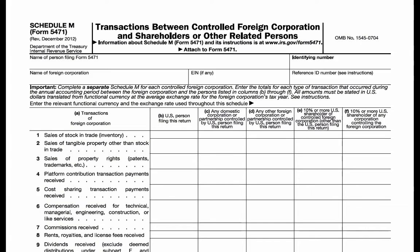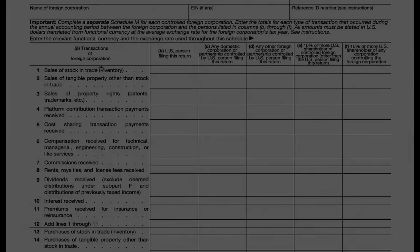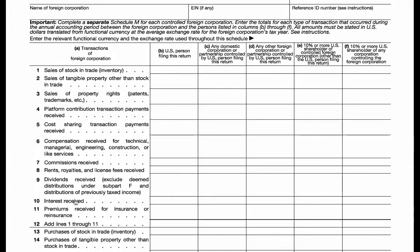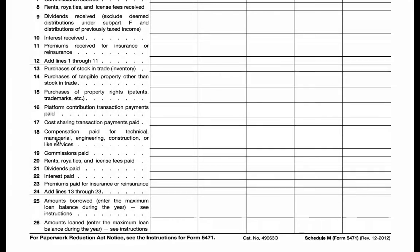Schedule M is completed in U.S. dollars and the exchange rate is entered here. Lines 1 through 11 show income items. Lines 13 through 23 show expense items. Lines 25 and 26 show intercompany loans.